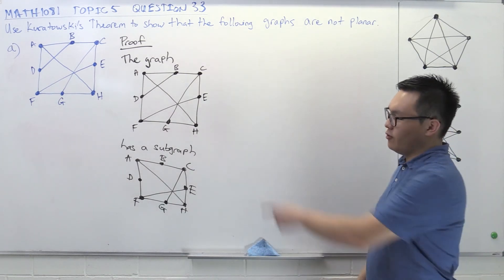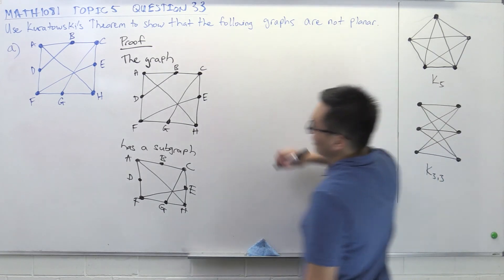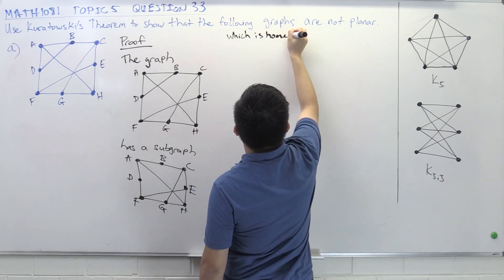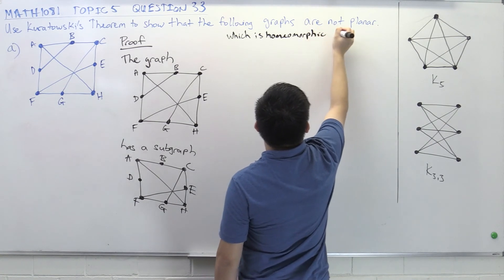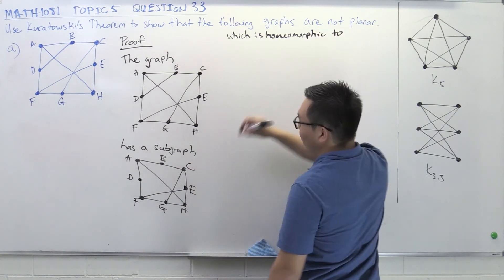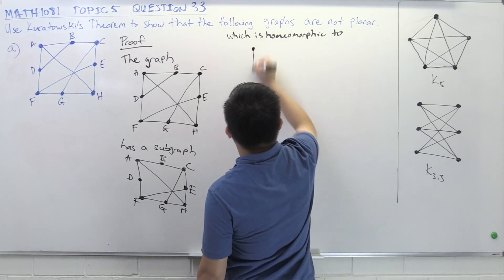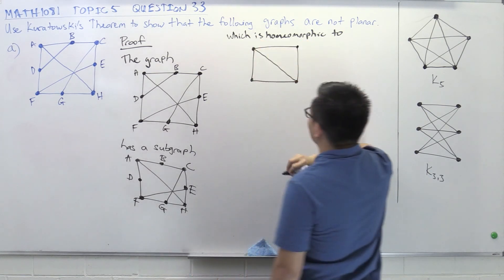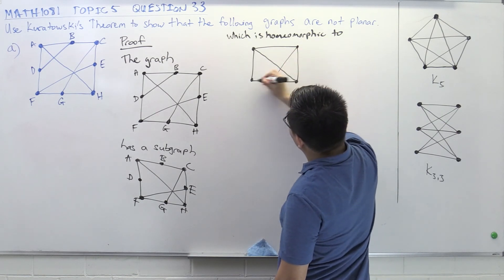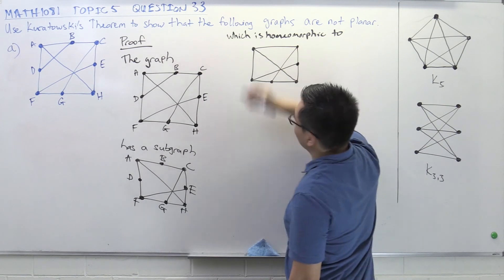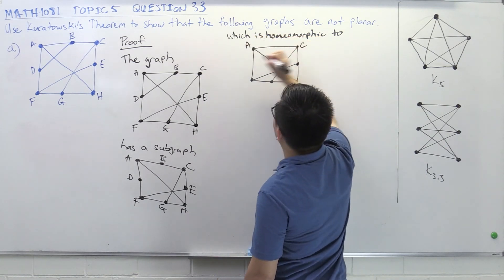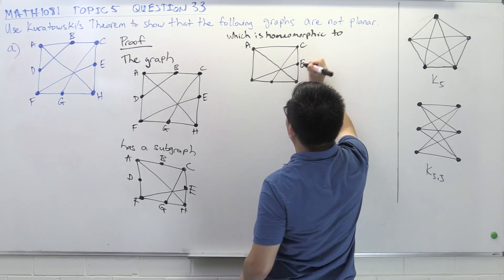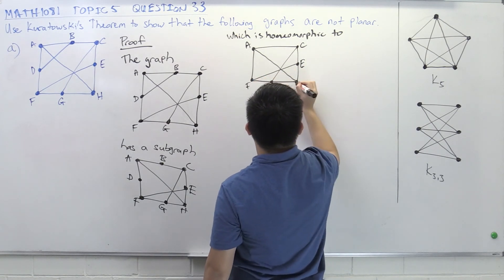But what was the next step? The next step was to remove B and D via homeomorphism. Right? So the graph has this subgraph, which is homeomorphic to. So I'm going to draw the same graph, but without the two vertices. So just quickly copy the graph. Still have the diagonal. Okay. So I've removed B and D. Just label them. A we've lost B. C we've lost D. E. That's E. K. V. F. G. H. Okay.